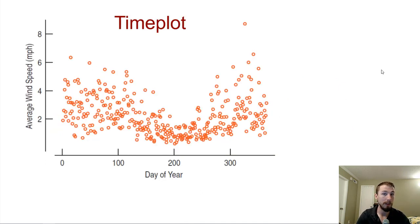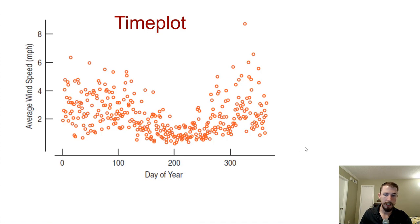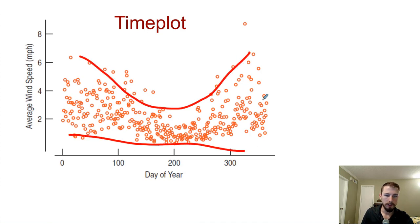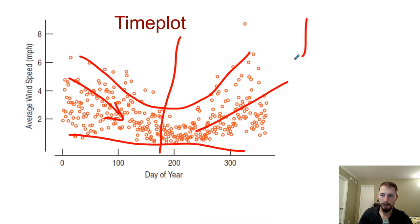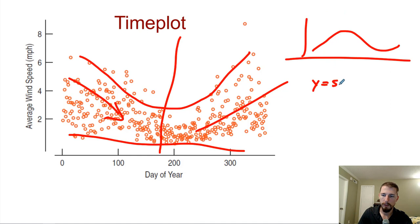Another example of a scatter plot is a time plot. A time plot has some unit of time on the bottom — weeks, days, months, seconds — and time always goes on the bottom as the explanatory variable. We were graphing wind speeds as they change throughout the year with 360 daily averages. This one doesn't necessarily have a clear direction. Another form that can occur is sinusoidal — if we're graphing daily high temperatures throughout the year, it would be cold, get hot, then cold again, just like y equals sine of x.